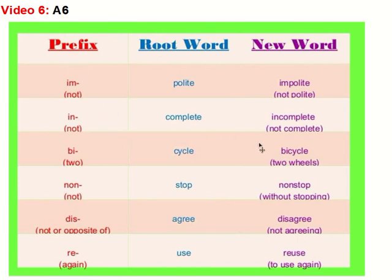As you can see on your screen, we have 'im' as a prefix. If you put it in front of the word 'polite,' you have 'impolite.' The root word is 'polite' — that is the root word. So the opposite is 'impolite,' which means not polite.